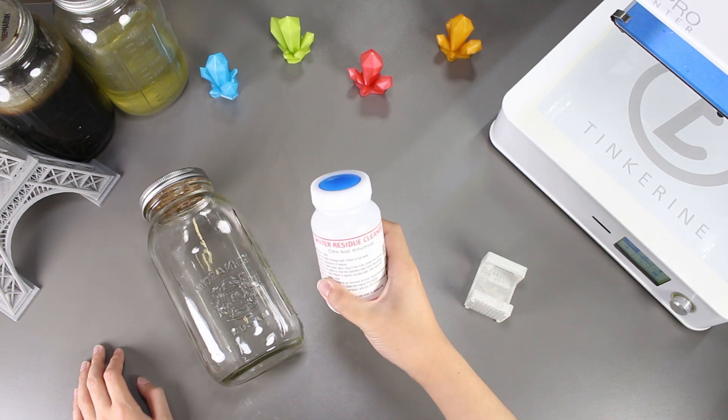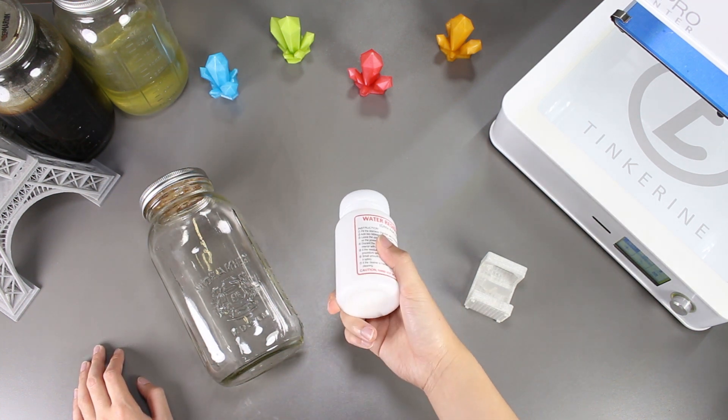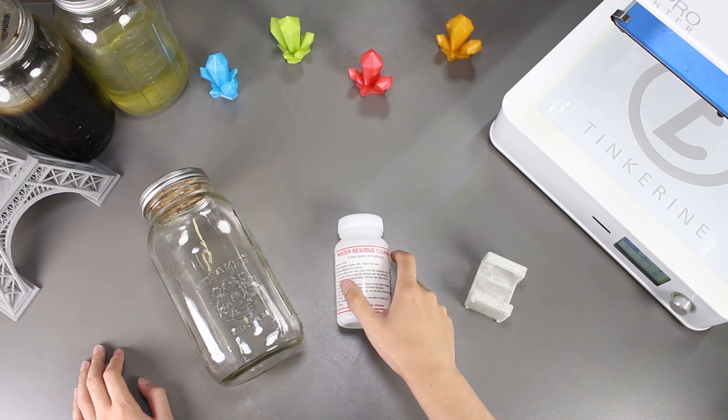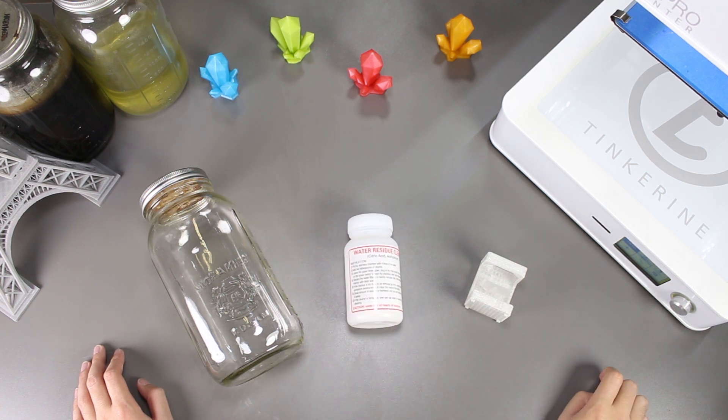Welcome to another episode of Tincturing Experiments. In this episode, we will be trying to smooth out our PLA prints with some pure citric acid.